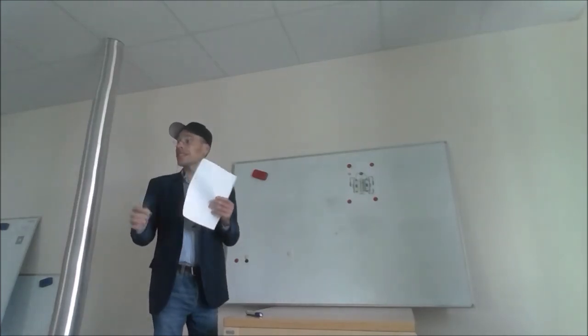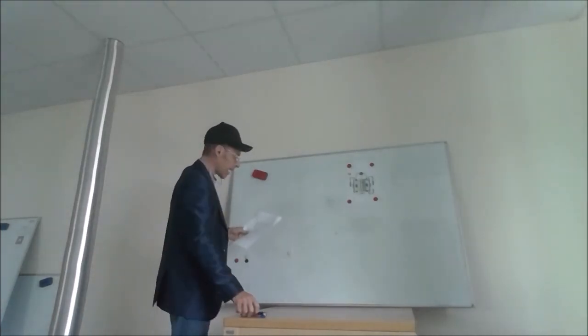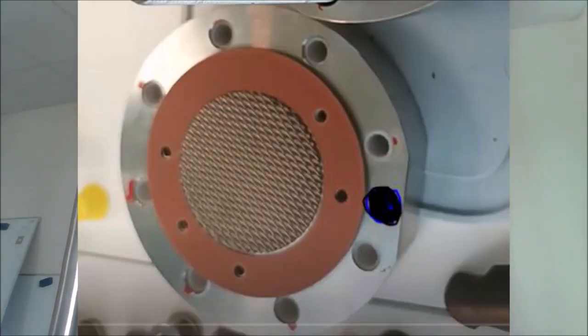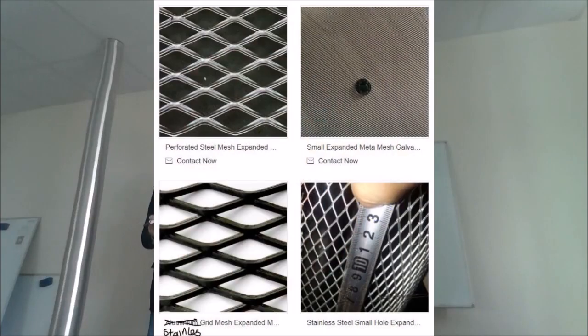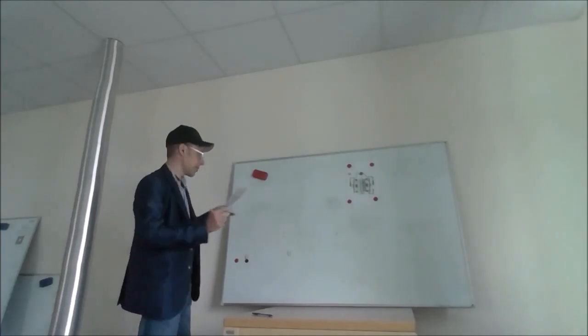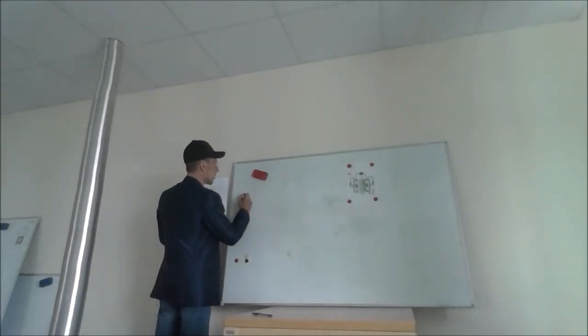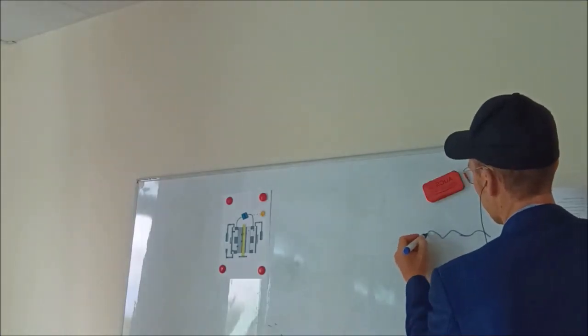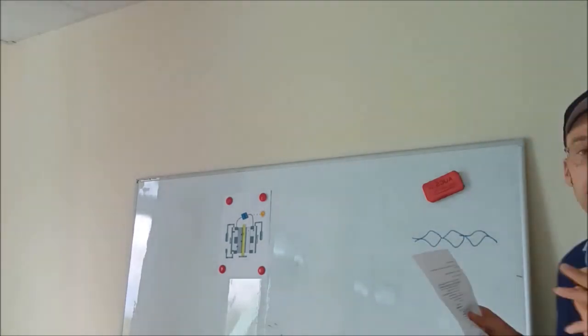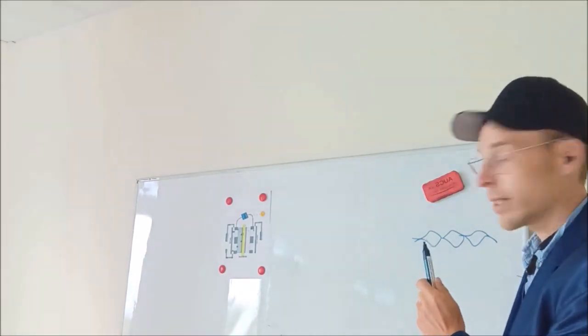The first and easiest tip to increase your hydrogen production is expanded metal. In German it's called Streckmetall or in English also steel mesh. I will put the link in the description below. It is nothing more than metal which has been torn apart and has a huge surface.